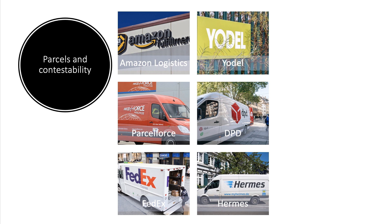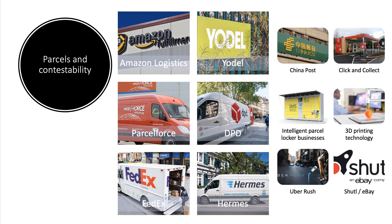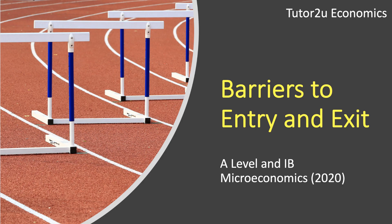A really good example is the parcel industry, where there is now intense competition between lots of parcel firms including Parcel Force, DHL, FedEx, DPD, and Hermes. There is far more competition than there ever was, and many of these businesses are now well-known brands that are scaled and offer a full range of services. Even they are facing more competition from click-and-collect from supermarkets, intelligent parcel locker businesses, and businesses such as Uber and Shutl, which was bought by eBay.